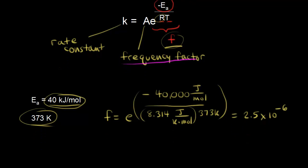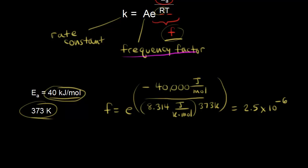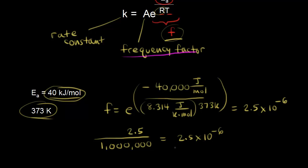What does this mean? If we had one million collisions, only 2.5 of them have enough energy to react — since 2.5 divided by one million equals 2.5 × 10⁻⁶. So that's an extremely small number of collisions with enough energy.